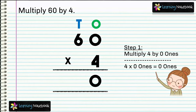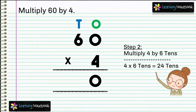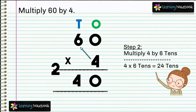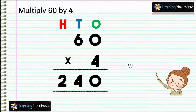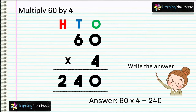In step two, multiply 4 by 6 tens — 4 into 6 tens equals 24 tens — so we write 24 in the answer: 4 is at the tens place and 2 is at the hundreds place. The answer is 60 into 4 equals 240.